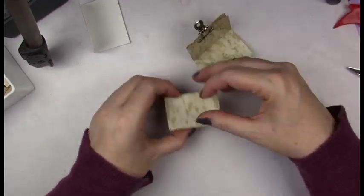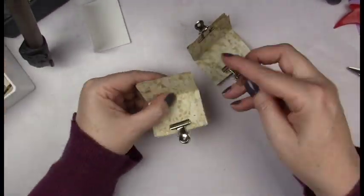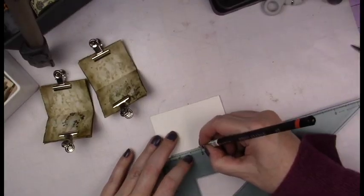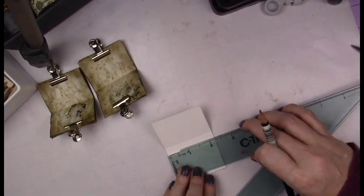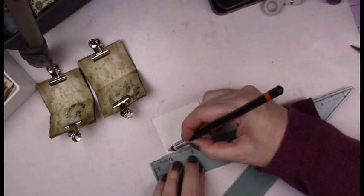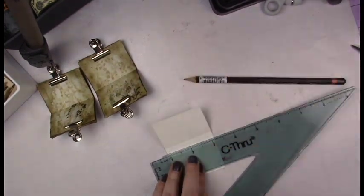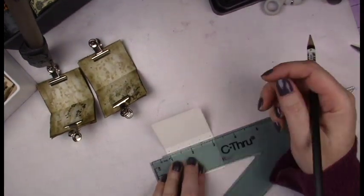I used some distress ink to ink around the edges so the paper looks extra old. Then I measured out where I wanted to place the holes for the thread that I'm going to use to bind them into the cover.